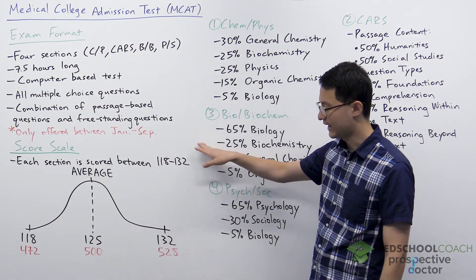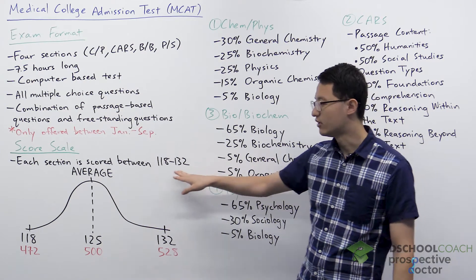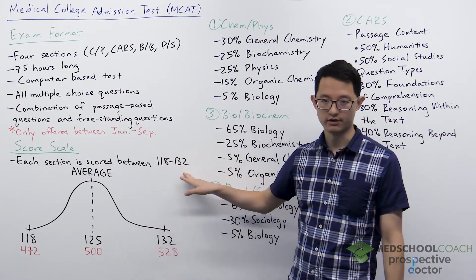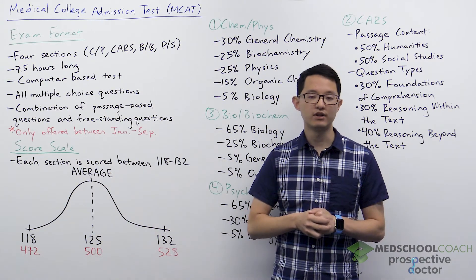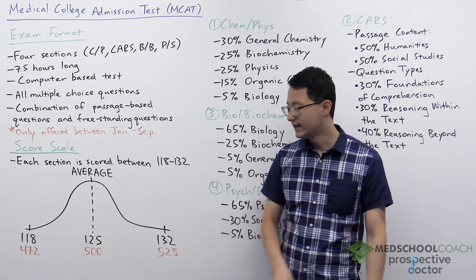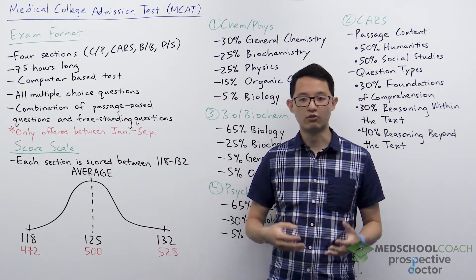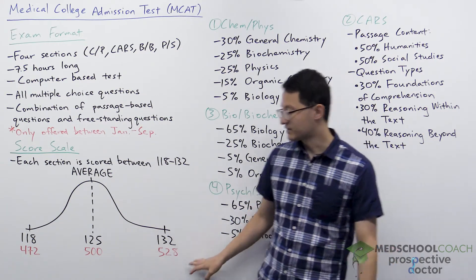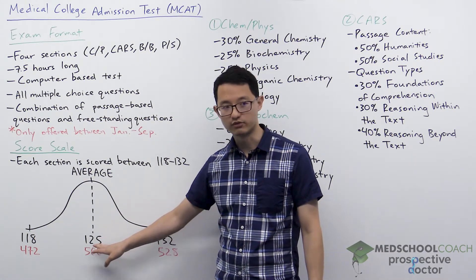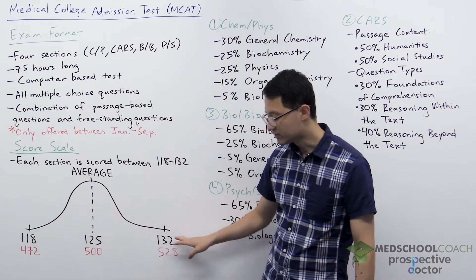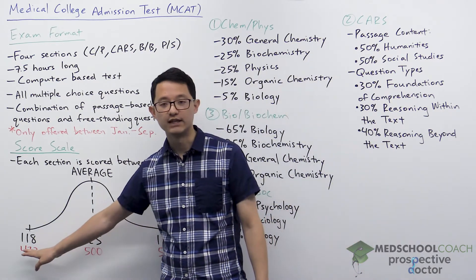Let's talk about how the MCAT is scored. Each of the four sections is scored between 118 and 132, where 118 is the lowest score and 132 is the highest. The score distribution follows a normal distribution, so most students will be close to the middle around 125, and very few students will receive a very high or very low score.